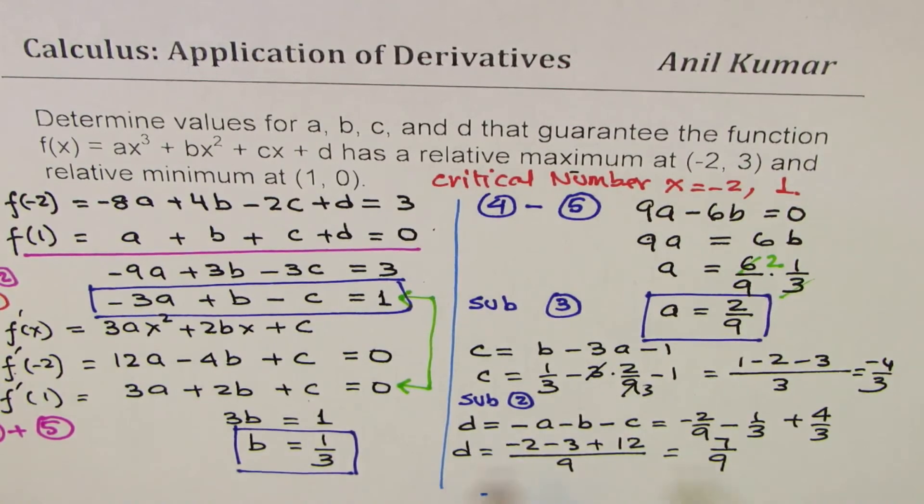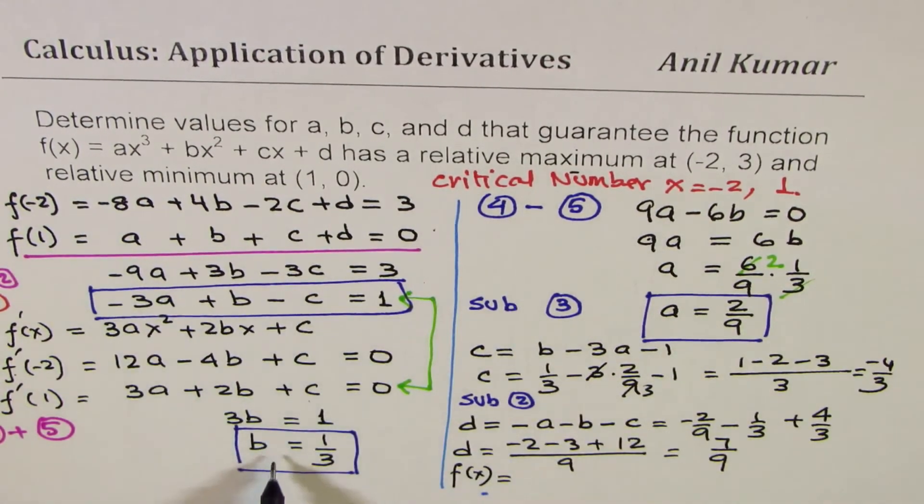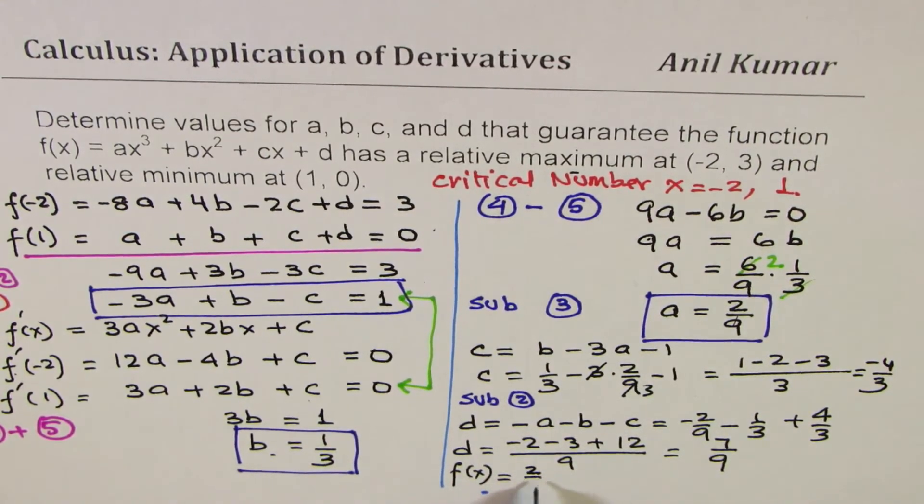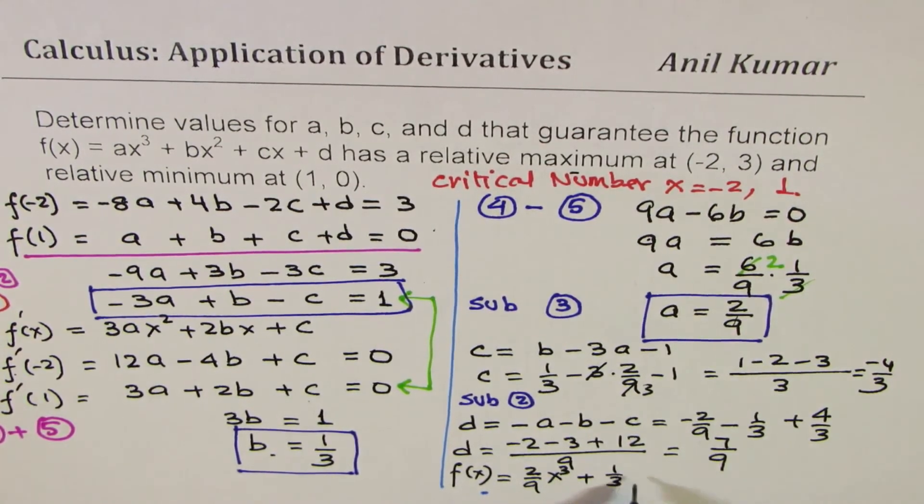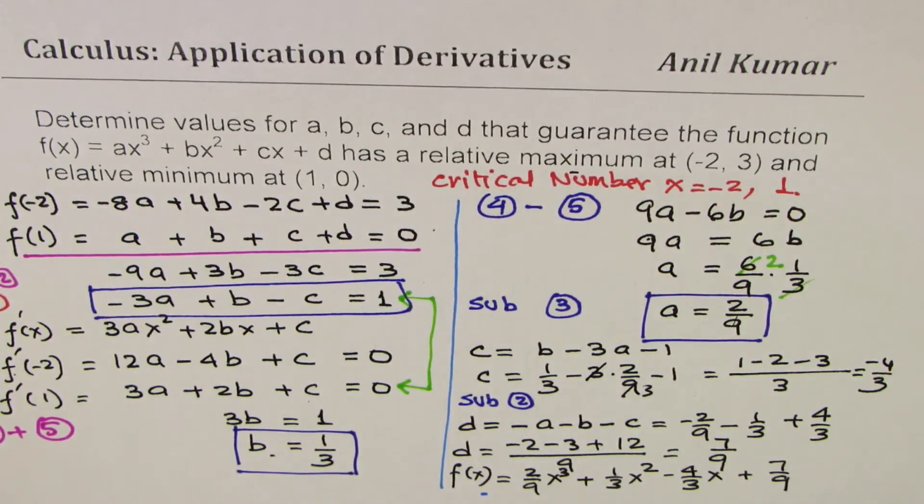So the values of a, b, c, d are known to us. We can write down the function now. So the function f(x) is 2/9 x³ + 1/3 x² - 4/3 x + 7/9. So that becomes the function and the values are highlighted.